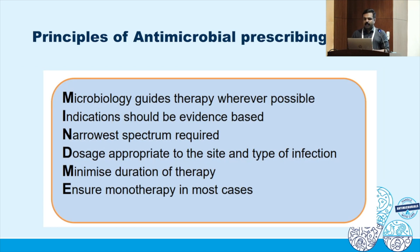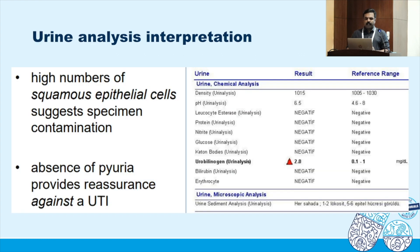The principles of antimicrobial prescribing are: use the narrowest spectrum required, appropriate dosage for the size and type of infection, minimize duration, and ensure monotherapy in most cases — combination therapy is not necessary in the majority. Urine analysis interpretation is also very important. Do not assume a severe UTI just because the urine examination shows pus cells of 30 to 40 per high power field; you must correlate with urine culture and other clinical signs of infection.